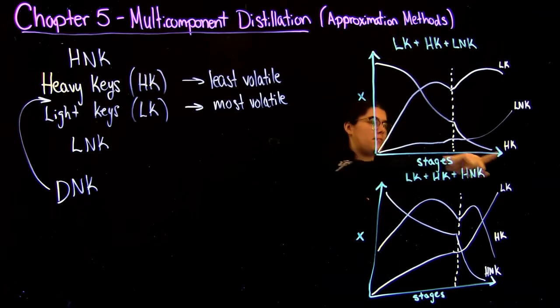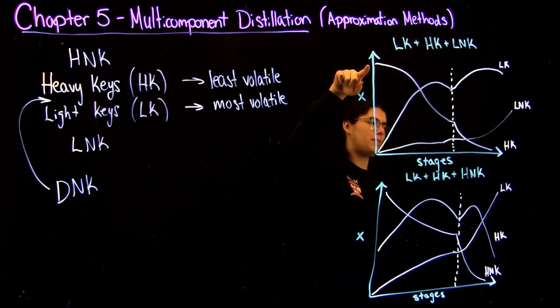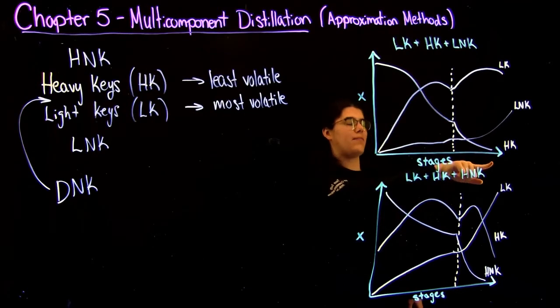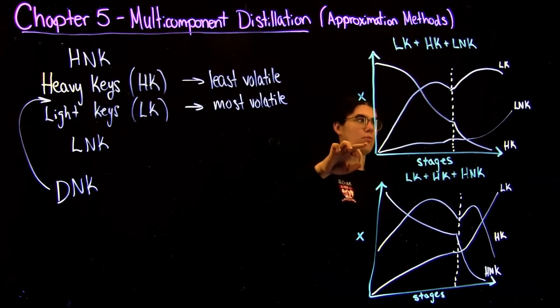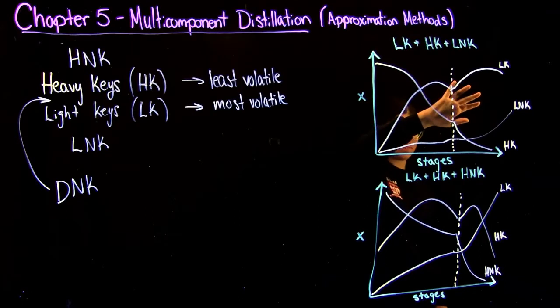So if we take a look at the heavy key, closer to the bottom you have a higher composition, and then as you go higher and higher on the stages, you have less of the heavy key coming out because it is less volatile. The opposite is true for the light key and the light non-key, which grow as we get to the top of the column.